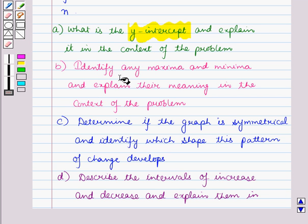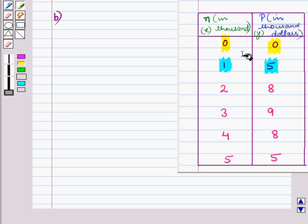Now, in the second part, we have to identify any maxima and minima and explain the meaning in the context of the problem. Now, in this table, we can see that value of P is 0, 5, 8 for N equal to 0, 1, and 2 respectively, which shows P is increasing.